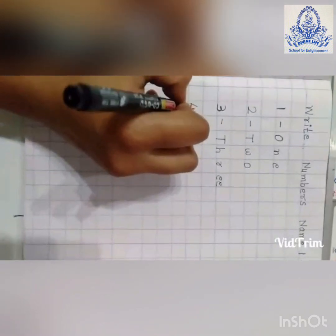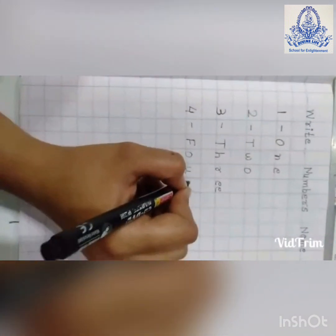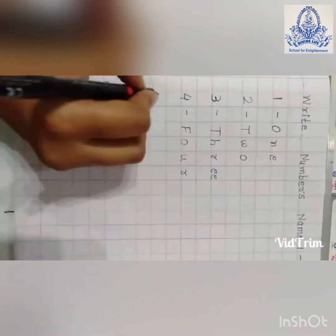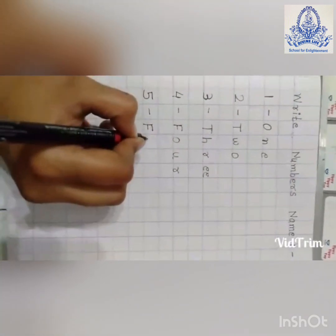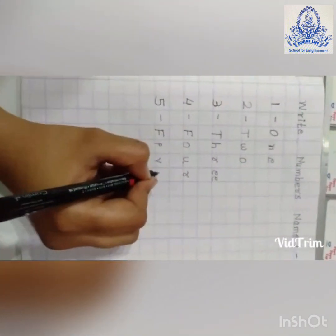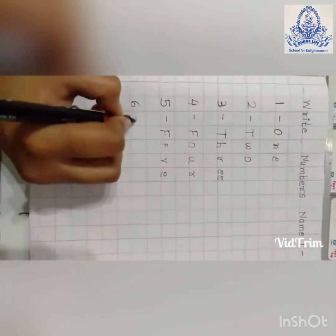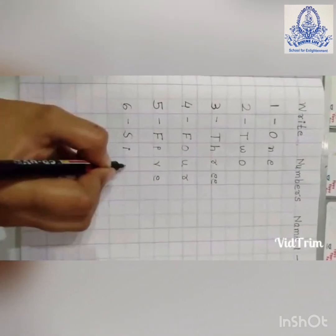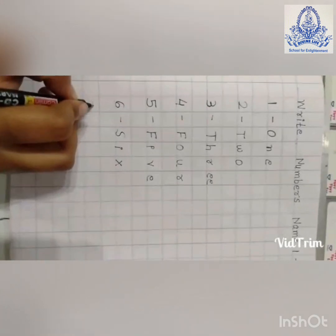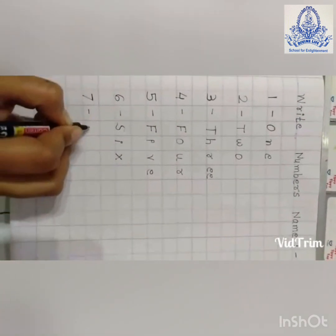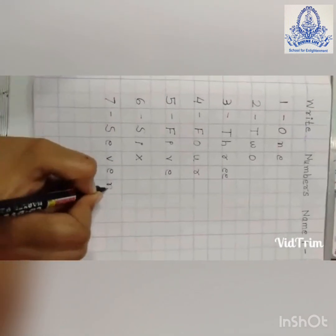4: F, O, U, R — 4. Number 5: F, I, V, E — 5. 6: S, I, X — 6. Number 7: S, E, V, E, N — 7.